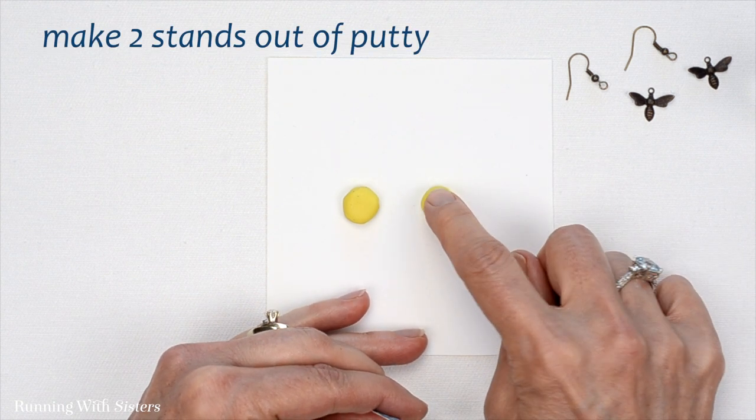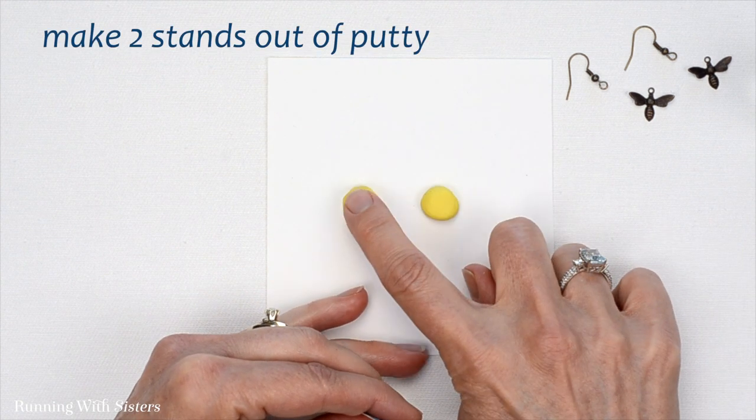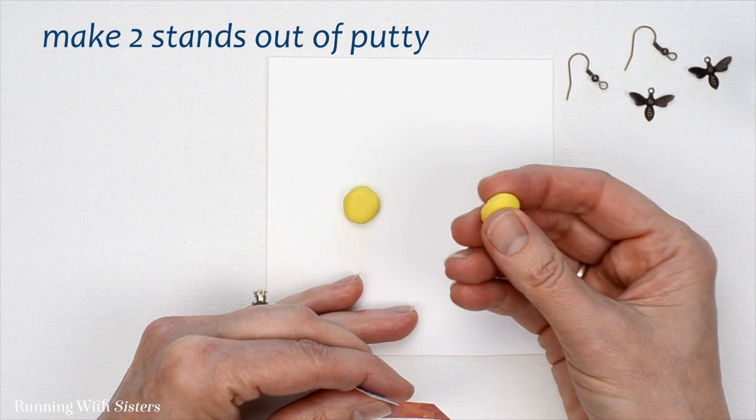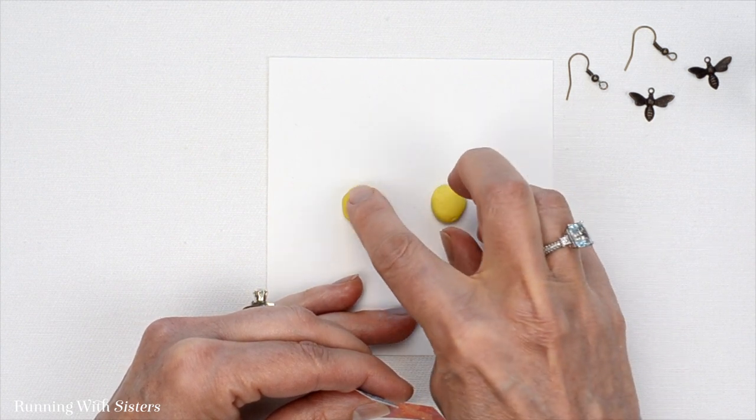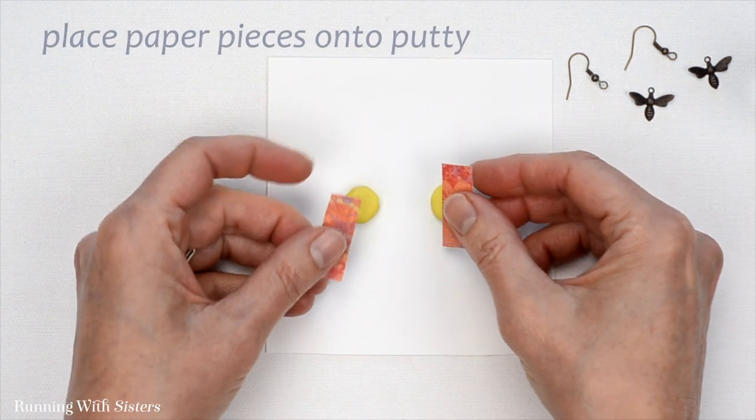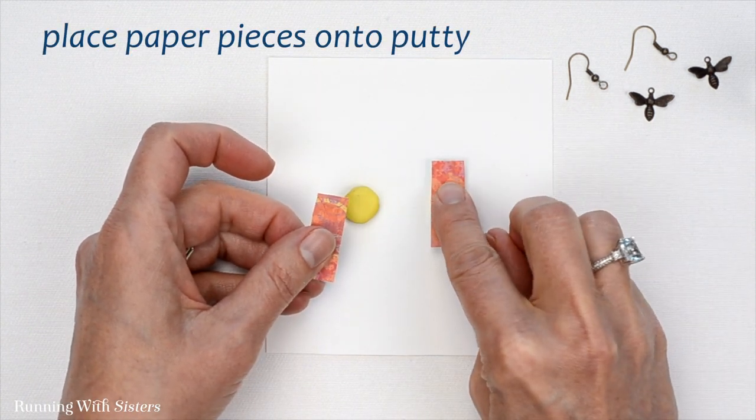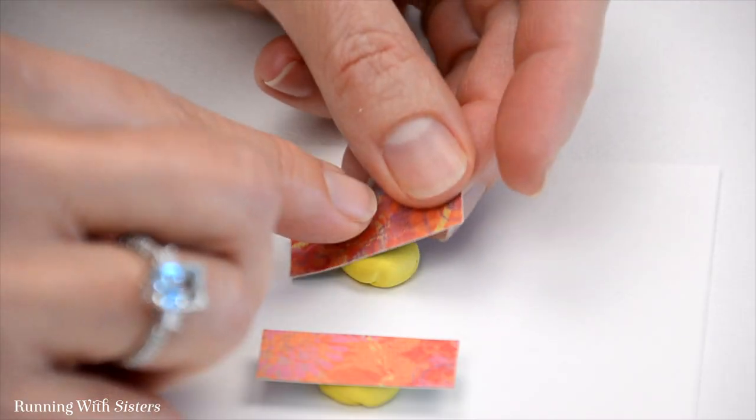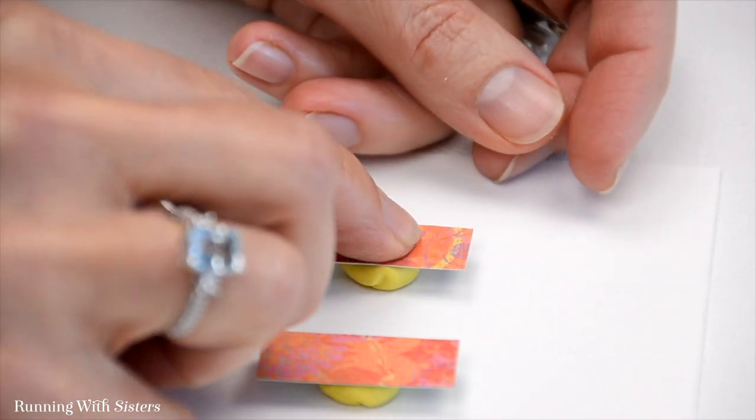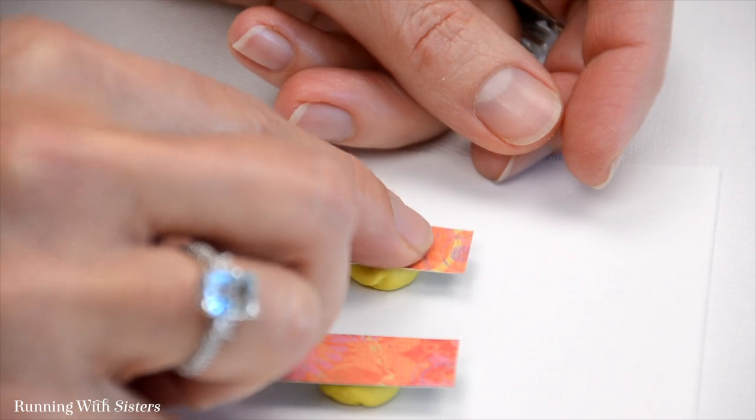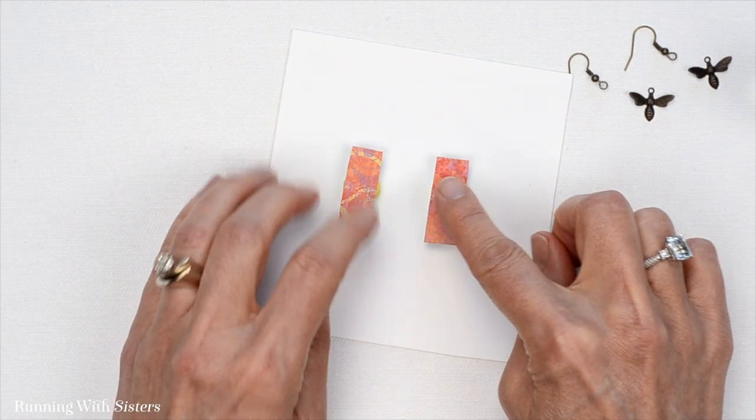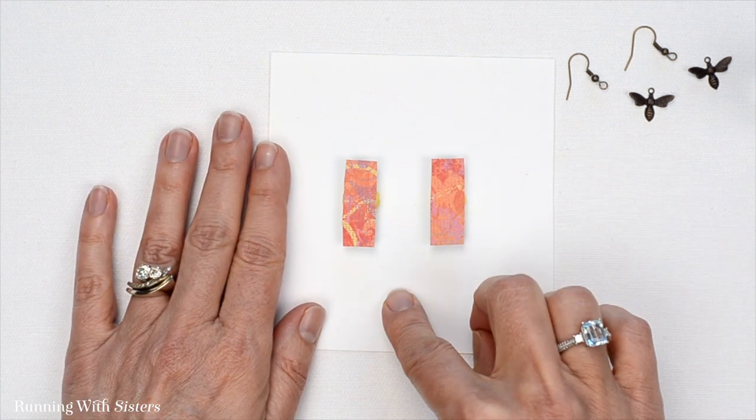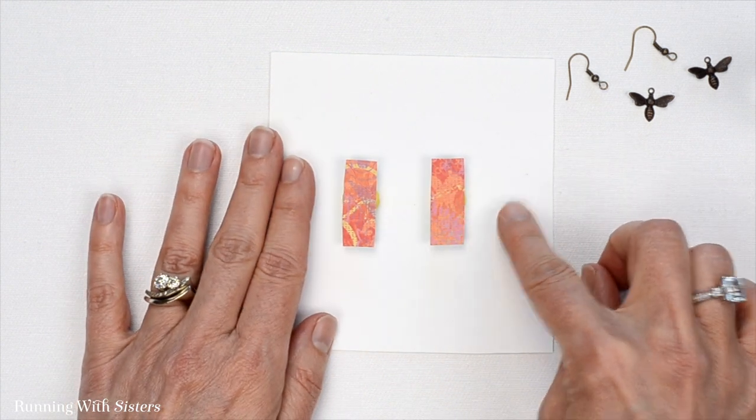I made two little stands out of putty, like that putty that you would use to hang a poster in college or whatever. That's just to make a little stand for us to put the little pieces of scrapbook paper. I'm pressing them down just ever so gently and making sure they're level. What that's going to do is allow us to paint the nail polish on them without getting it on our surface and it also will keep them from sticking to the surface.